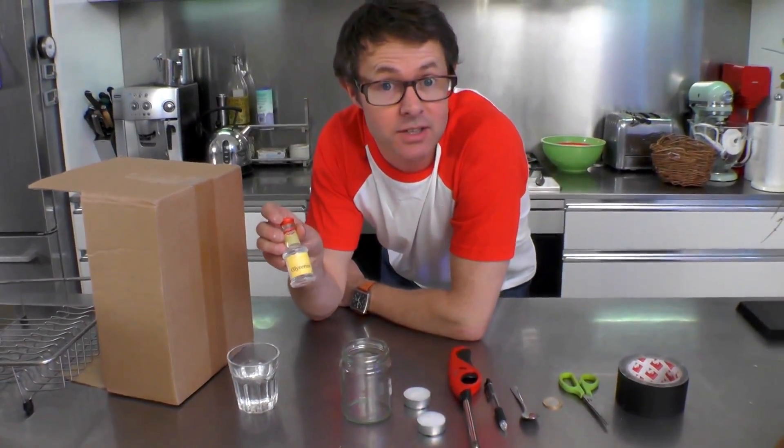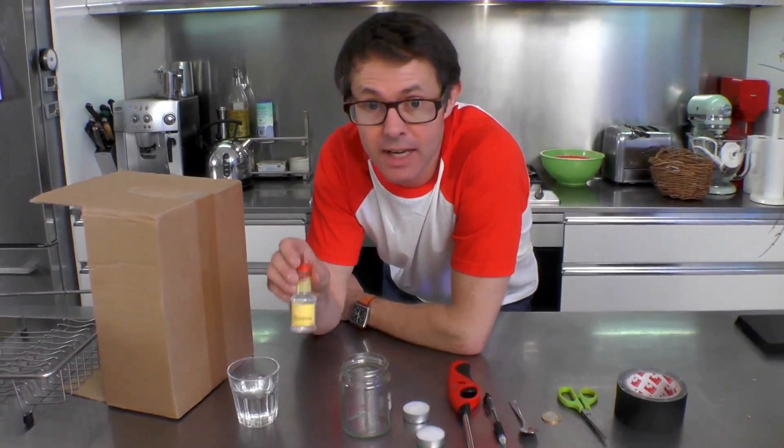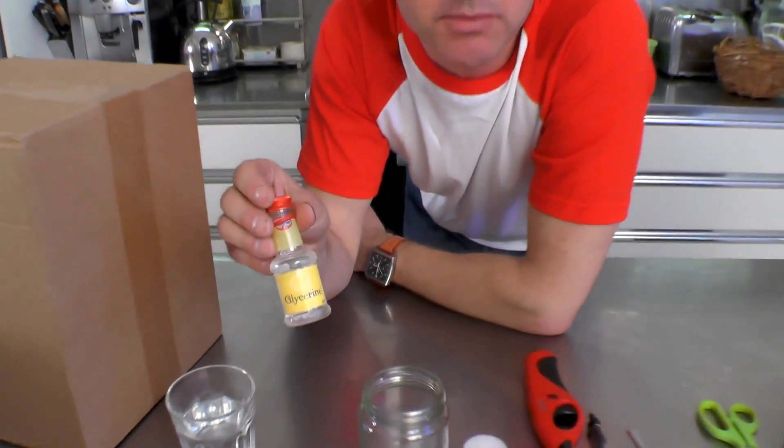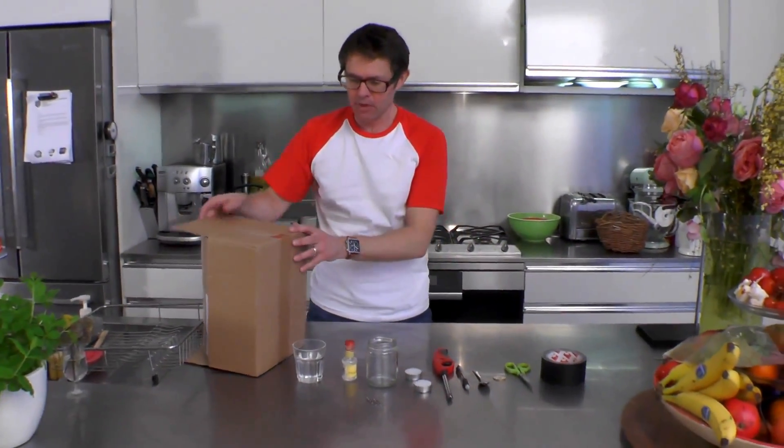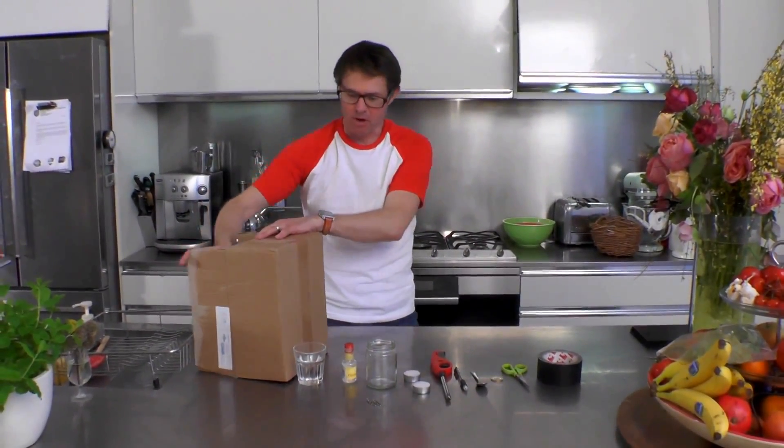And then the only thing that you really need to go out and buy is some glycerin. This is sold normally in the baking section of a supermarket, really easy to lay your hands on. It's something you use when you're baking, sort of sugar and cake and stuff like that. And a little bit of water and a box.